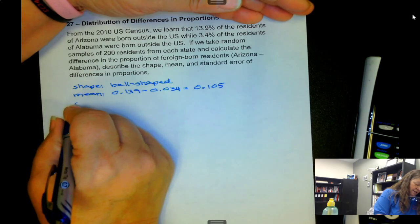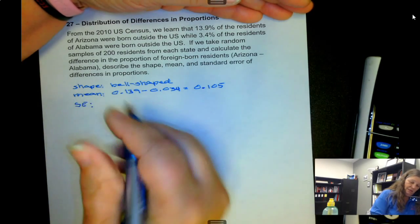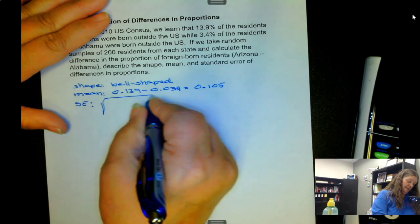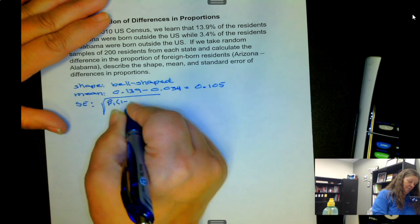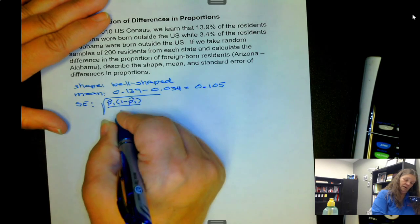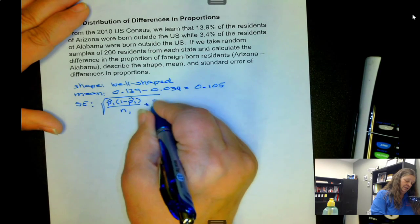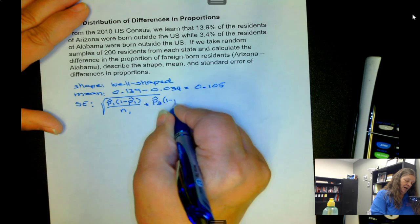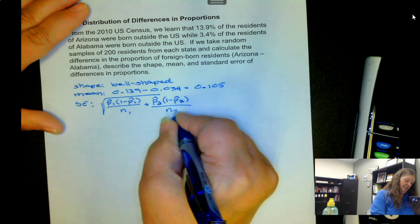And the standard error. Now, the standard error is the square root of p-hat sub 1 times 1 minus p-hat sub 1 over n sub 1 plus p-hat sub 2 times 1 minus p-hat sub 2 over n sub 2.